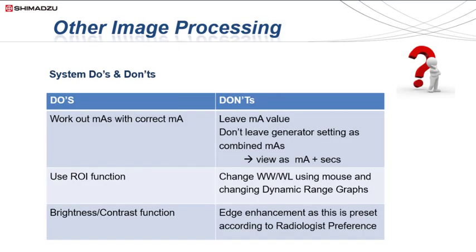Leave the MAS conversion function and adjust KV and time. Further recommendations for image processing include utilising the ROI function to change the windowing, especially in MSK — this is a great reprocessing function that does not alter the radiologist's ability to change the window width and window length range. Do not use the mouse to auto the window levels, as this will increase frustrations for your radiologists. The brightness and contrast function from your tool sections can be adjusted without mitigating the window width and window length functions for the radiologist. If correct exposure techniques are used, then the need for further edge enhancements is not required — these preferences will be preset in program settings to align to radiologist's preferences.